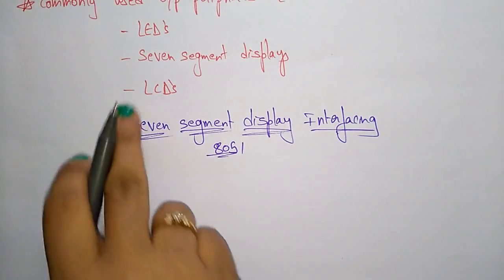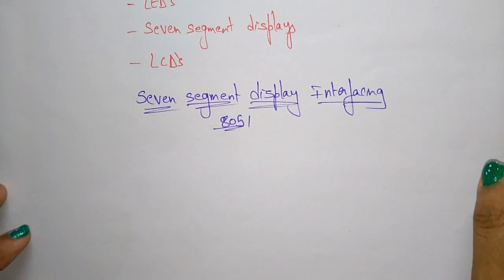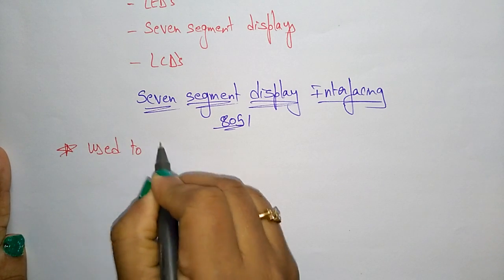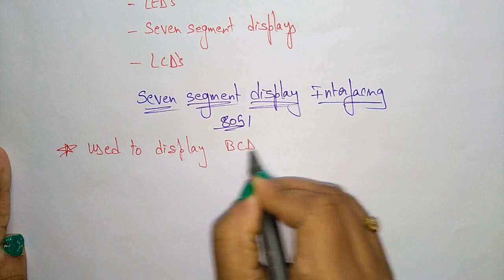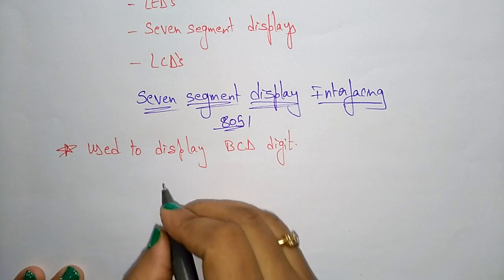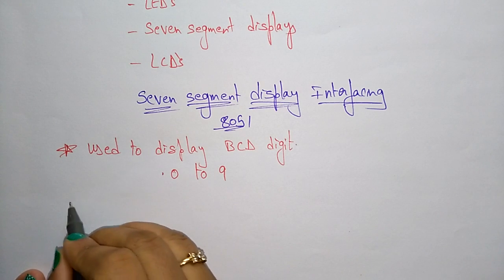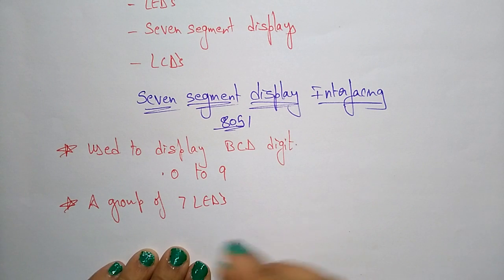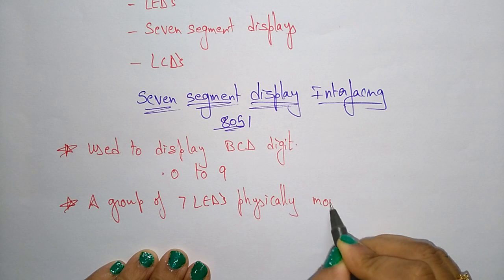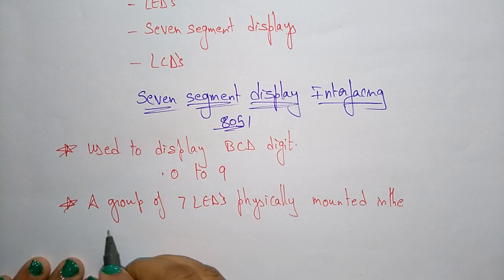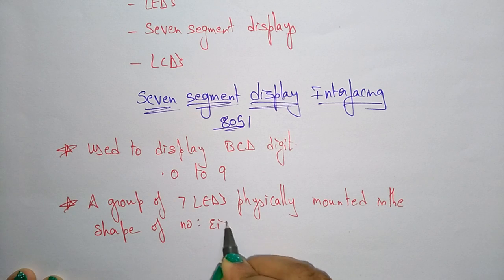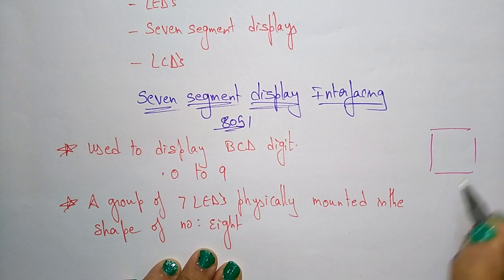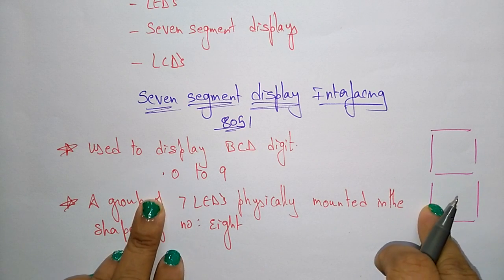The 7-segment display is used to display BCD digits from 0 to 9. A group of 7 LEDs is physically mounted in the shape of the number 8. These 7 LEDs are arranged in this shape to represent different digits.